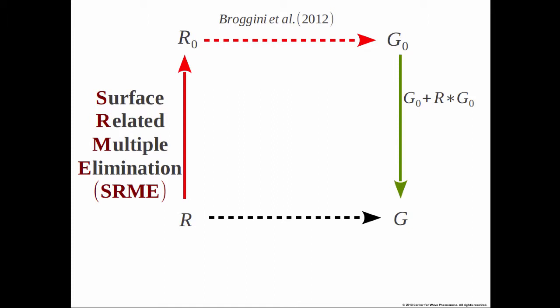But we don't have to do that — we can go straight from R to G. This process is coined by Wapenaar as the holy grail. In the holy grail approach, we don't have to do SRME; we go from the full R with all the free surface multiples directly to G. This will be the focus of my talk — going from R to G, no SRME required.